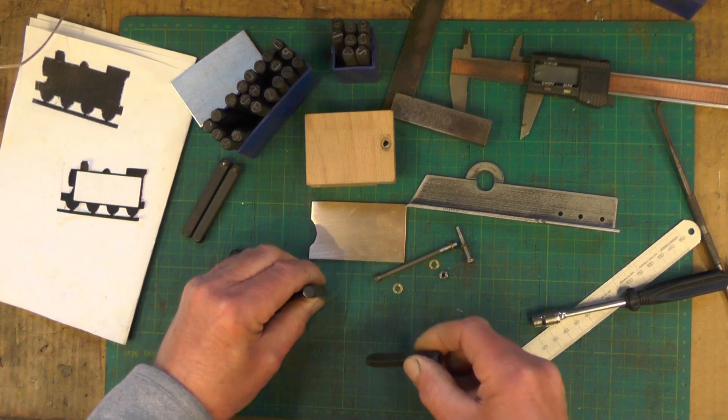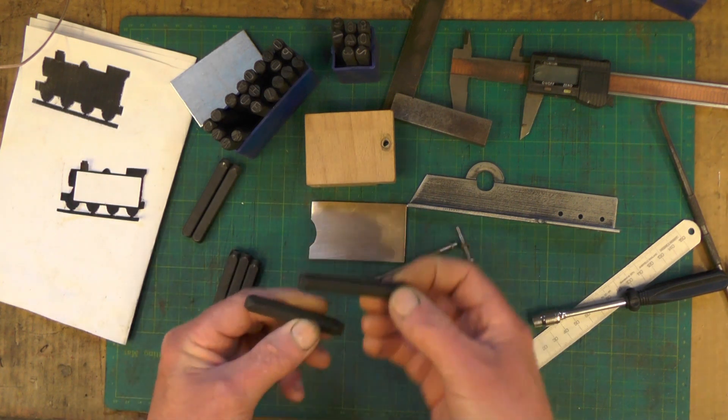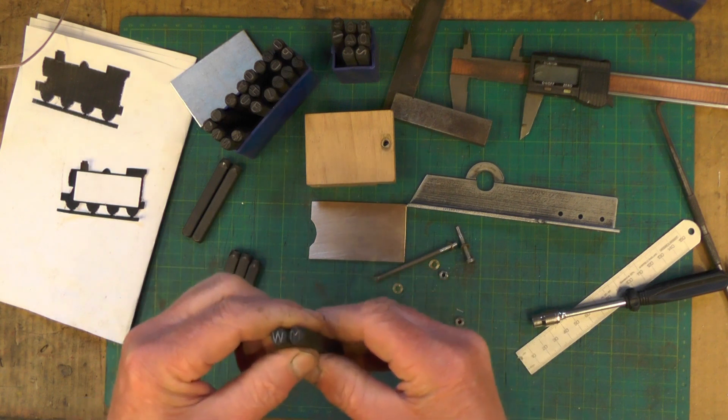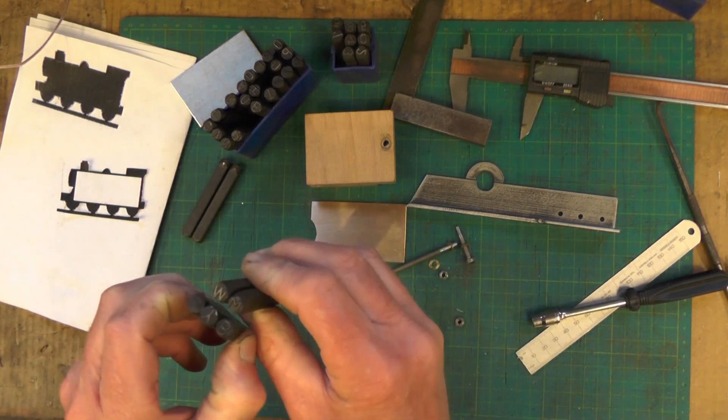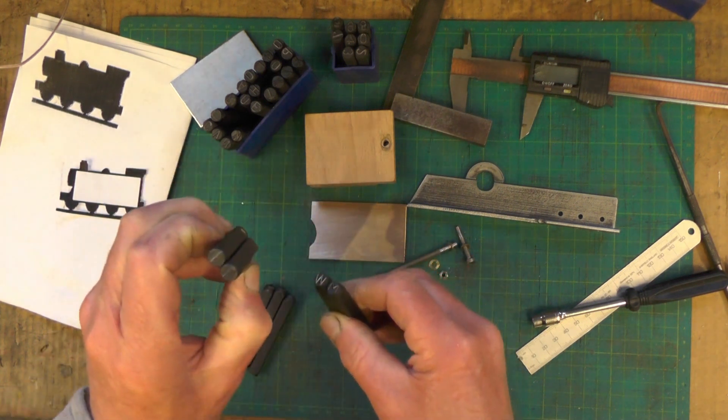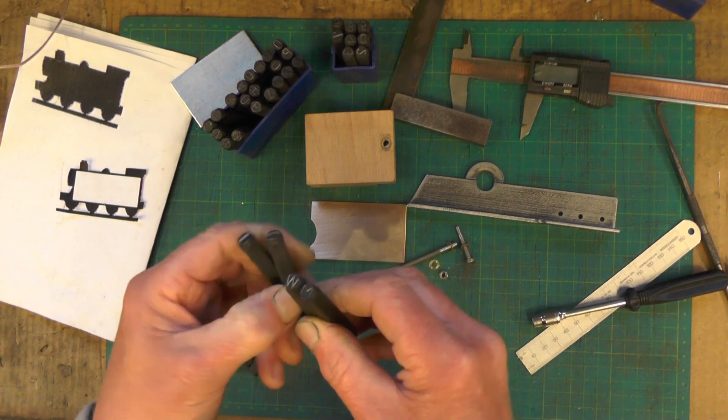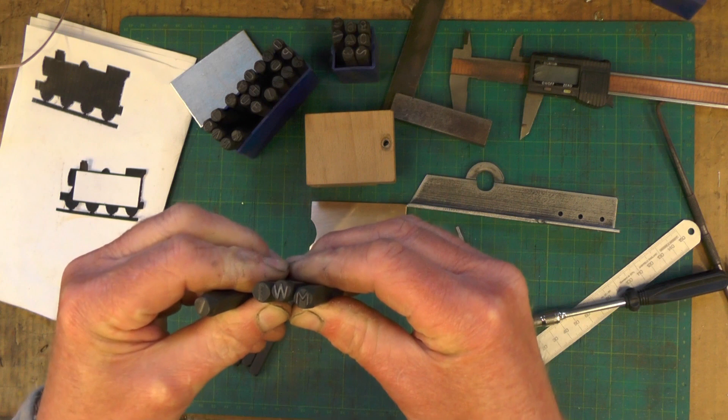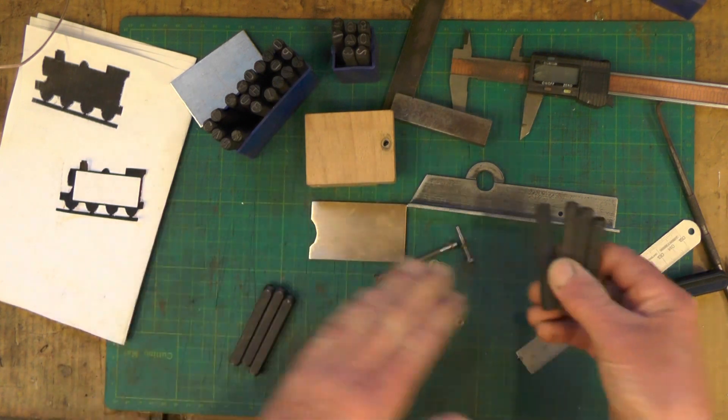But that's no good when you get to your letter W or your letter M because they're a lot wider than a standard run-of-the-mill letter. And then the letter I and the number one are a lot narrower. So if you're spacing them side by side, you're getting different spacings, so the spacings are all wrong and it's difficult to keep everything in line.